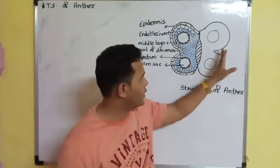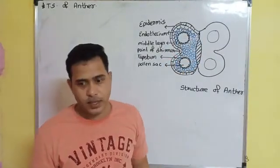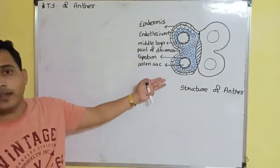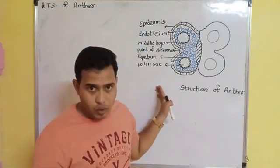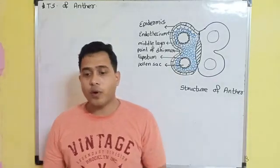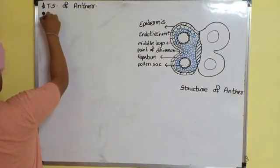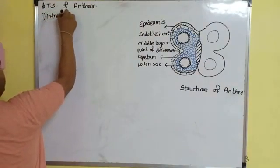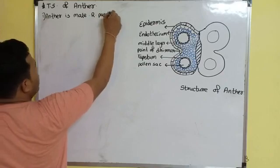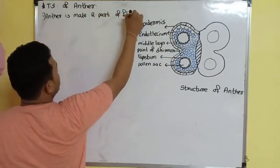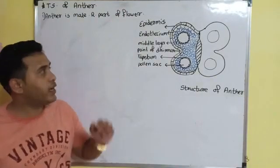You have to draw on both sides. First of all, the anther is a male reproductive part. It is a part of the androecium. So the first point: anther is a male reproductive part of a flower.